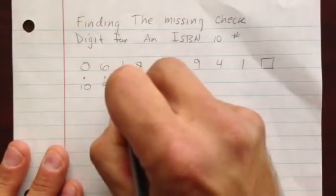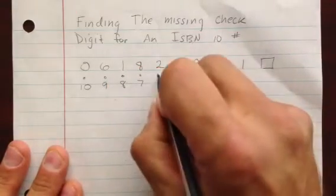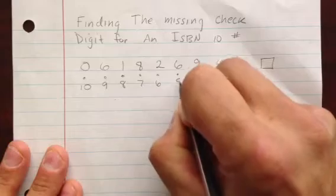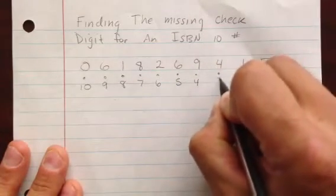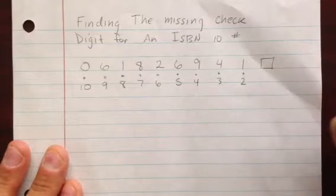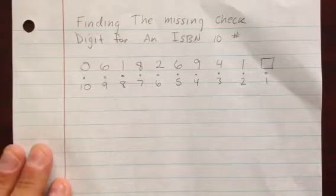So times 10, times 9, 8, 7, and these just count straight down. 6, 5, and so on. In this case, you'd be multiplying the check digit by 1, which leaves it unaffected, which is why we don't do anything. We just leave it alone.